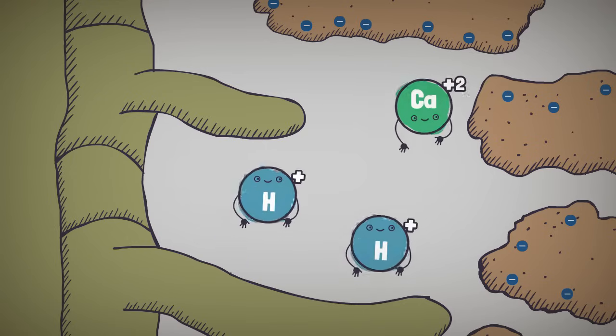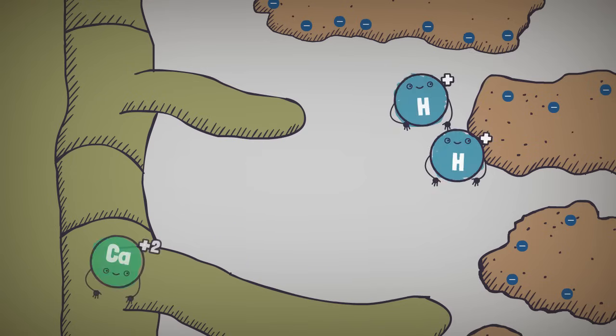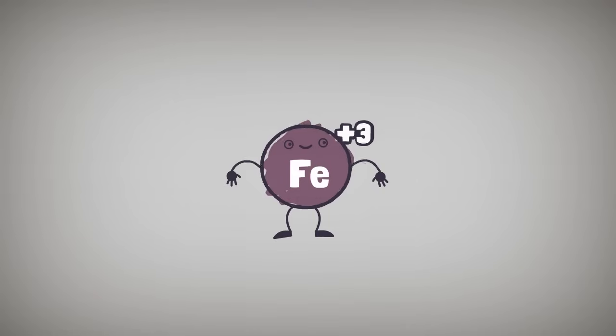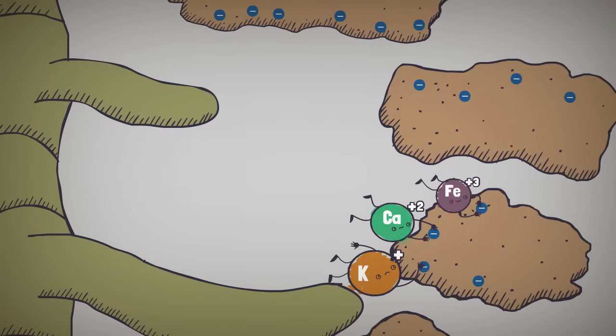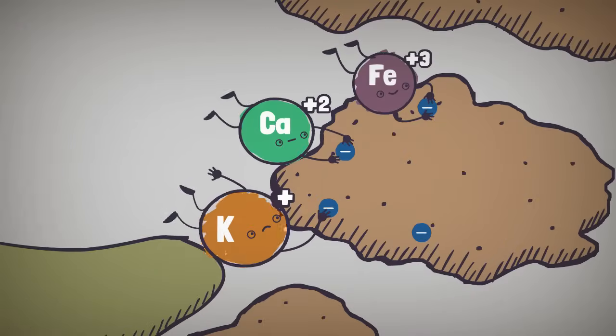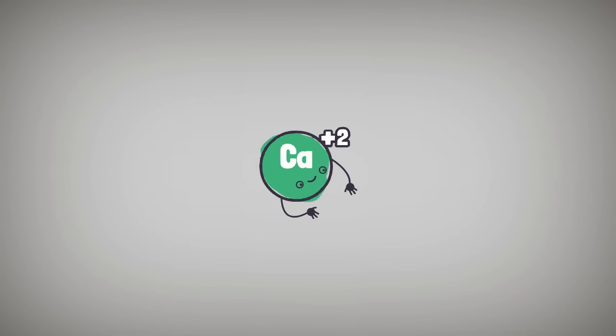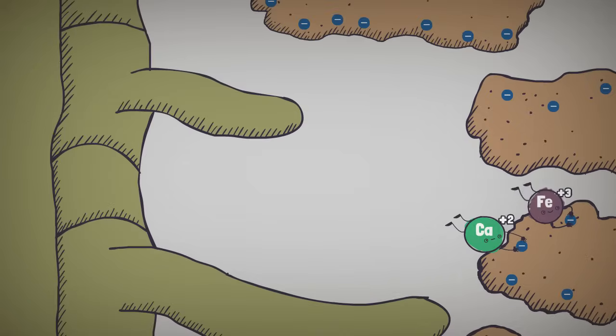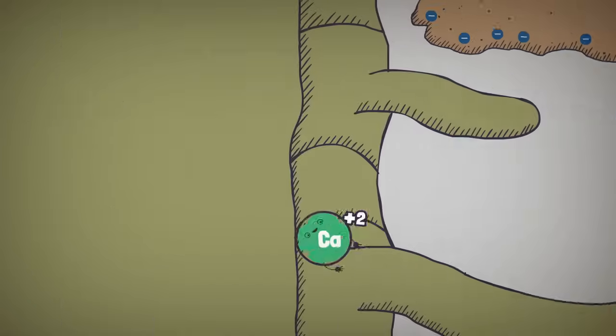But for nutrients with a positive charge of two, like calcium, two hydrogen cations are needed. The higher the positive charge, the harder it gets to exchange or trade cations. That's because a cation with high positive charge and small size is preferentially held by the soil over those with lower charge or larger size. Meaning that a large cation with a positive charge of one will be the first to be released. A divalent cation having a charge of two will be released more easily than a cation with a positive charge of three.